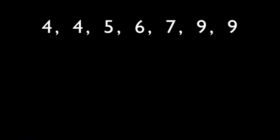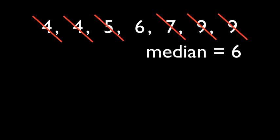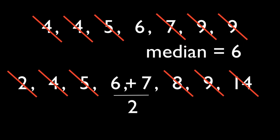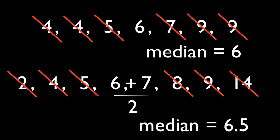Median is the middle number of a data set when the data is ordered from smallest to biggest. However, if there is an even number of numbers in the data set, there's going to be two middle numbers. Therefore, you need to find the average or mean of those two middle numbers — add them together and divide by two.